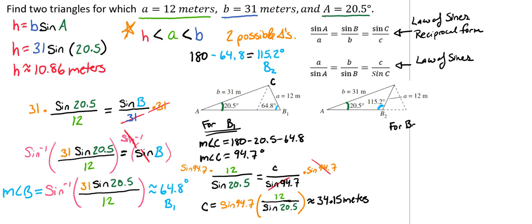But what about for B2? So we're going to go ahead and find the measure of angle C, which is going to be 180 minus 20.5 minus 115.2. And so we see that the measurement for angle C is going to end up being 44.3 degrees.